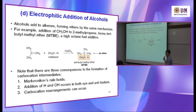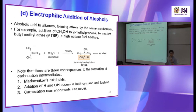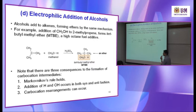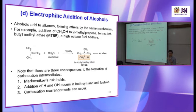Now we go one step further: electrophilic addition of alcohol. Instead of water, now it's alcohol — the alkene reacts with an alcohol such as methanol, in the presence of acid. So the mechanism is similar to the one using water, because this is R-O-H and water is H-O-H. So the first step — what do you think is the first step? The double bond will attack the H, but not the H from the alcohol. It attacks the H from the acid, for example hydrochloric acid. It's the same mechanism.